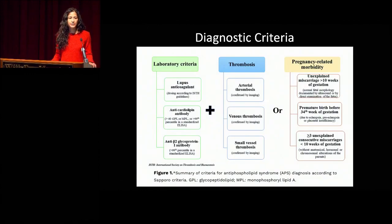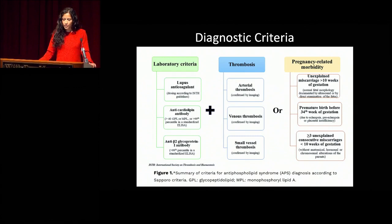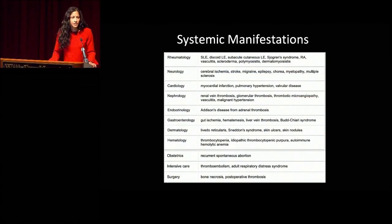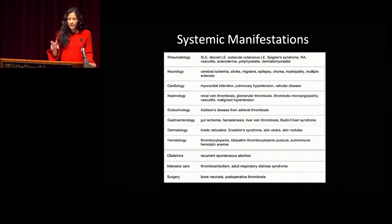The diagnostic criteria for antiphospholipid syndrome include laboratory criteria — positive lupus anticoagulant antibody, anticardiolipin antibody, or anti-beta-2 glycoprotein-1 antibody — in the setting of arterial, venous, or small vessel thrombosis confirmed by imaging, or pregnancy-related morbidity such as unexplained miscarriage greater than 10 weeks, premature birth before 34 weeks, or more than three consecutive unexplained miscarriages less than 10 weeks. Systemic manifestations range from cerebral ischemia, migraines, MI, gut ischemia, dermatologic findings such as livedo reticularis, thrombocytopenia, recurrent spontaneous abortions, and bone necrosis.